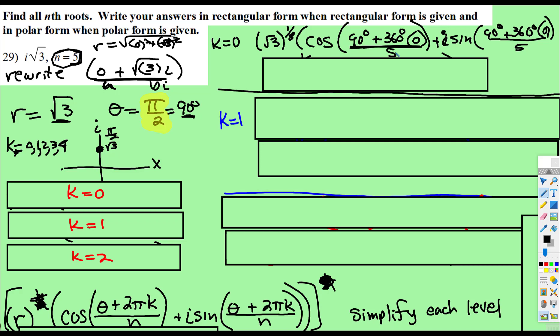Well, 90 plus 0 is 0, 90 divide 5 is 18 degrees. So we have ⁵√3 times cosine 18, plus i sine 18.